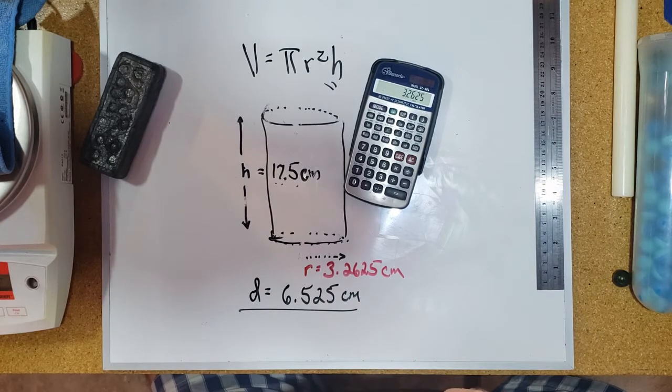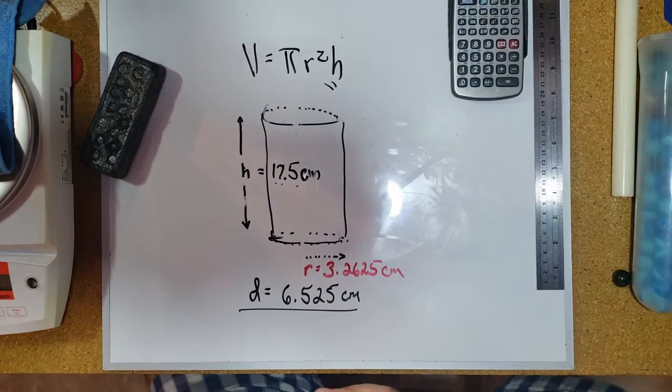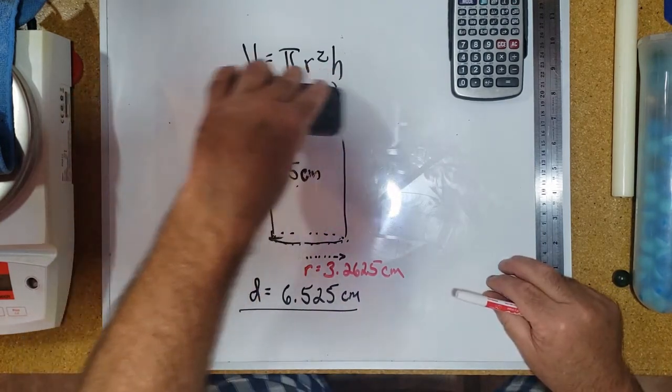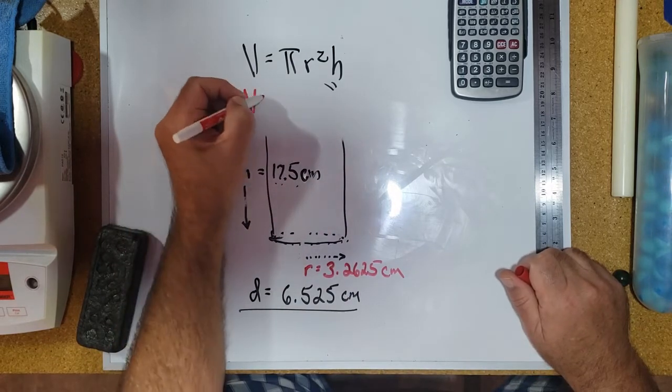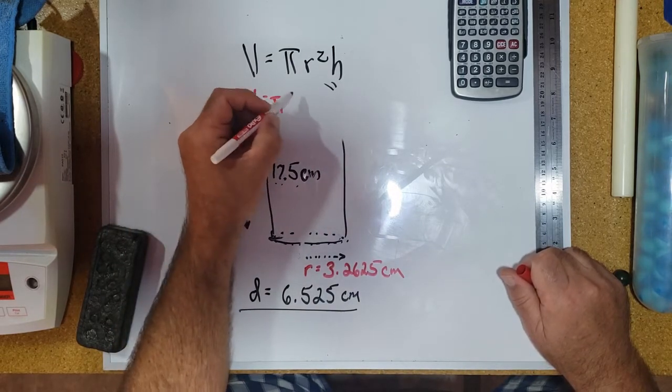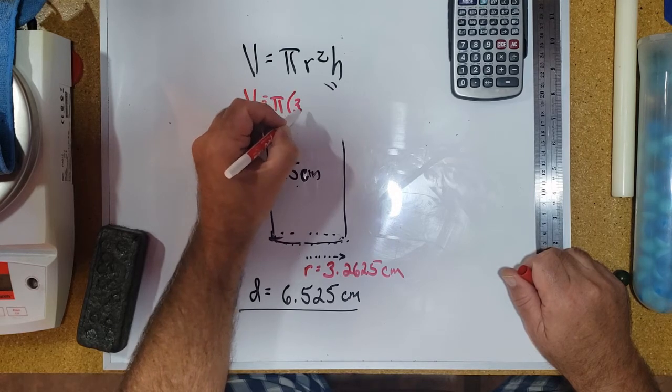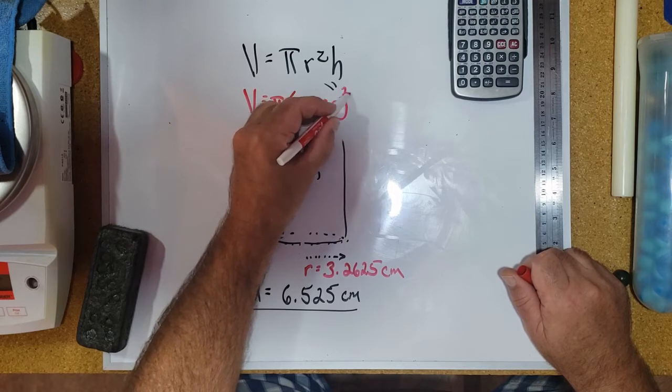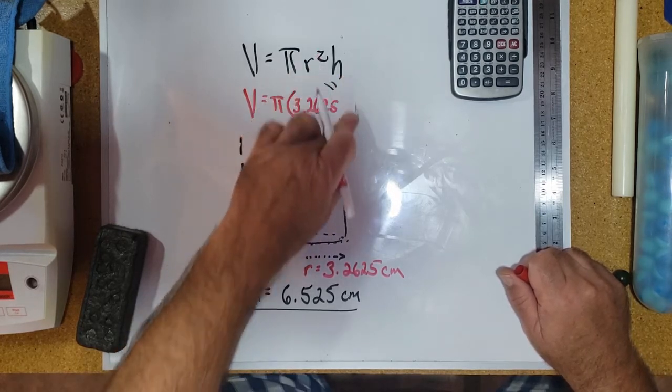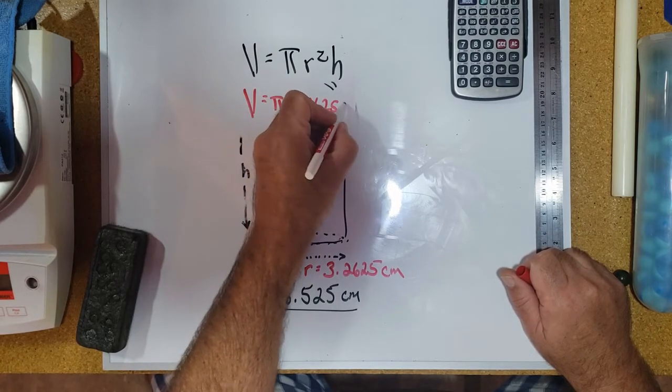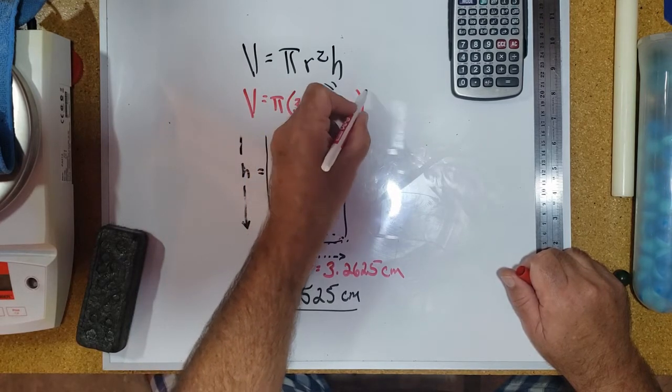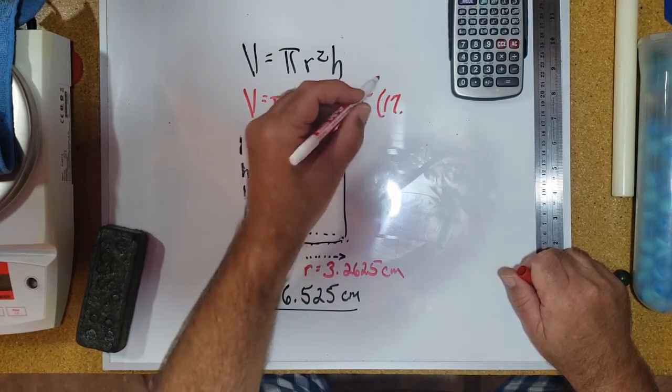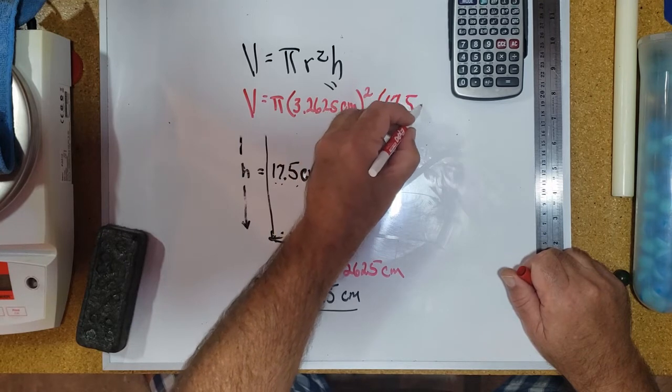All right, now I could plug in to this formula right here. V is equal to π times the quantity 3.2625 squared—actually let's make that 3.2625 centimeters—that'll be squared, and then the height is 17.5 centimeters.